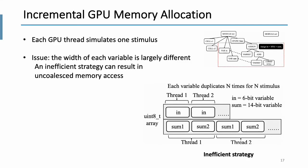So first, incremental GPU memory allocation. In our design, each GPU thread simulates one stimulus. And of course, we need to allocate memories for all variables in the design. However, the issue is that the width of each variable is largely different. An inefficient strategy can result in uncoalesced memory accesses. Figure on the bottom shows an inefficient strategy that uses one fixed width array, an 8-bit array, to store all variables. And here in is a 6-bit variable, and sum is a 14-bit variable, stored into two memory allocations, sum one and sum two. So to load all bits in sum, each GPU thread needs to access device memory twice. And this data organization, resulting in uncoalesced memory accesses, may largely decrease the simulation performance.